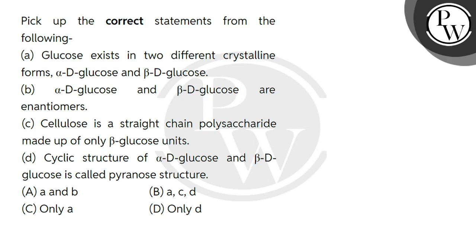Hello students, let's see this question. The question says pick up the correct statements from the following four statements. You have to choose the correct statement here and correct option to mark. The first statement (a) says glucose exists in two different crystalline forms, alpha-D-glucose and beta-D-glucose. This is exactly right.